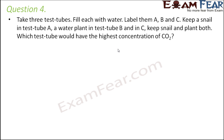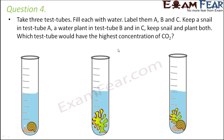Question number four: take three test tubes, fill each with water, and label them A, B, and C. Keep a snail in test tube A, a water plant in test tube B, and both a snail and a plant in test tube C. Which test tube would have the highest concentration of carbon dioxide?